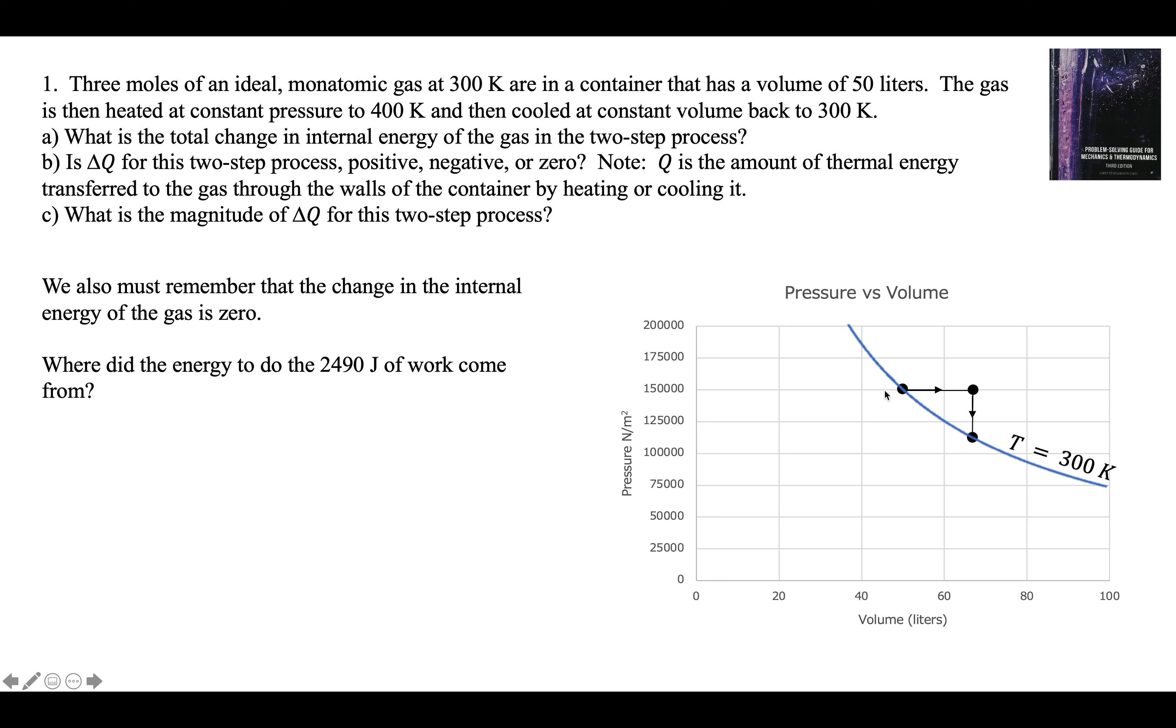But the gas did work from here to here. Where did that come from? Where did it get this 2490 joules if it's at the same temperature? Energy must be conserved. This energy must have come from thermal energy added through the walls, Q.